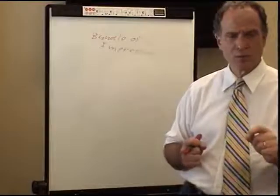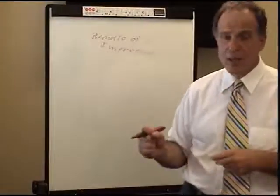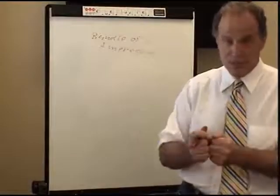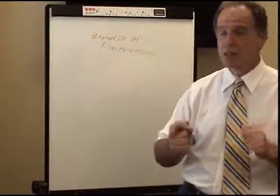And one of the big points that Hume says is that we habitually associate certain ideas that we have seen together, that resemble each other, or we've seen causally, what we think to be causally related.